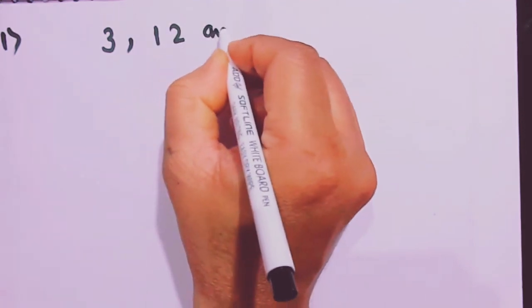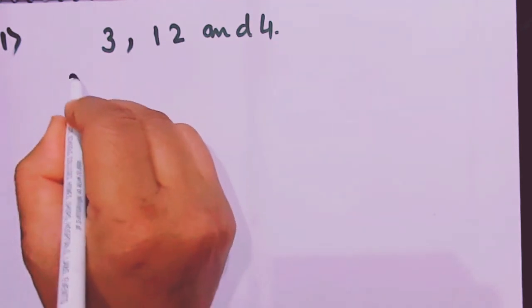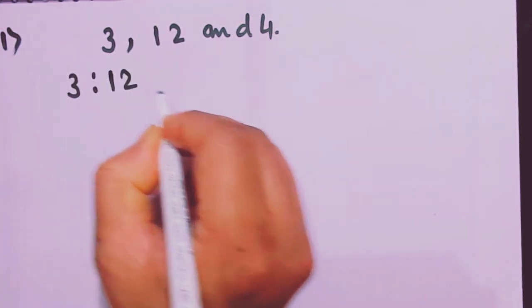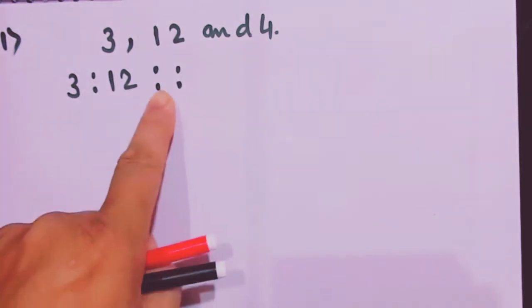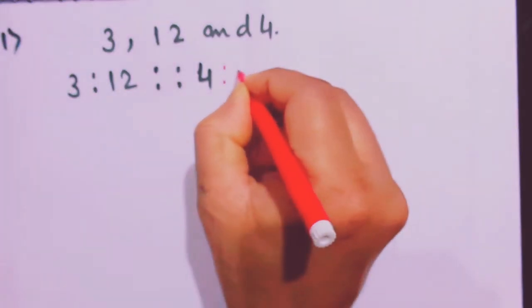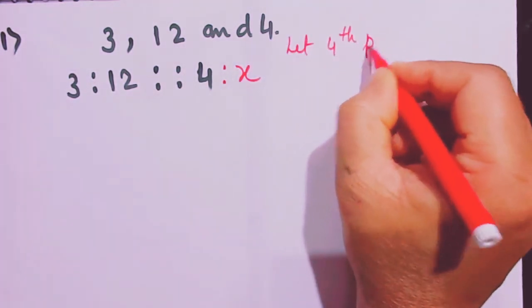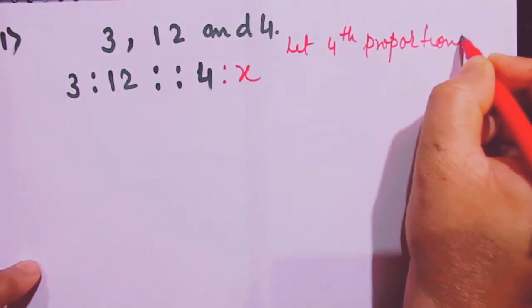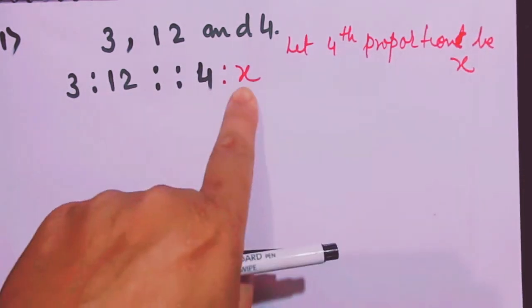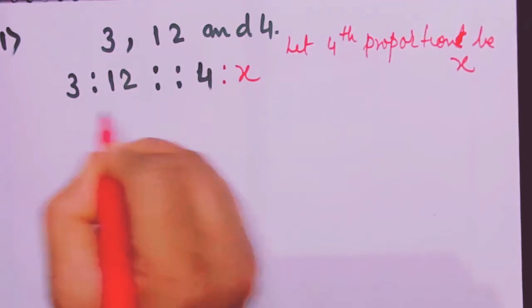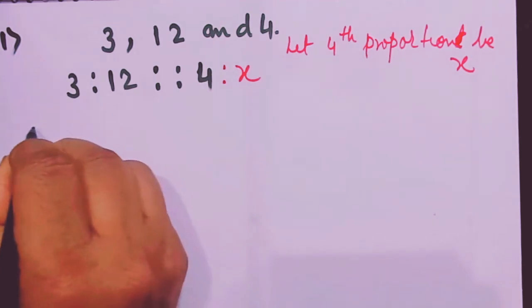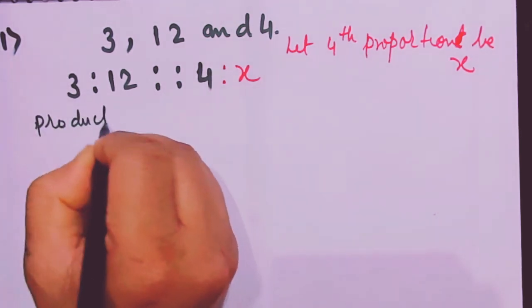Question number two states: find the fourth proportional when 3, 12 and 4 are given. This means the ratio of 3 to 12 is in proportion to 4 to an unknown number. We keep the fourth proportion as X, so let fourth proportion be X. Now, using the formula — product of extremes is equal to product of means — write it before you start your work.